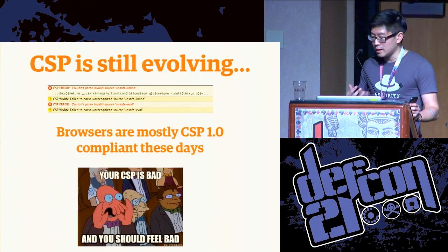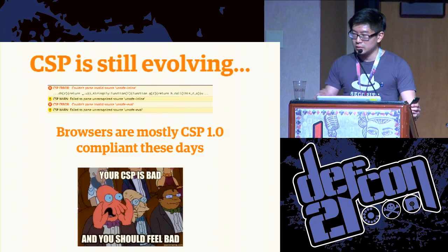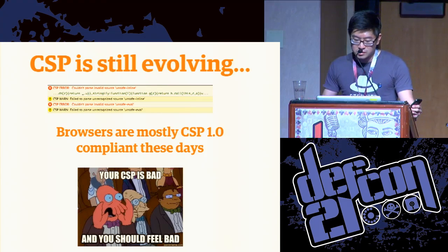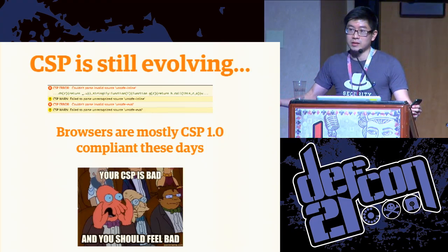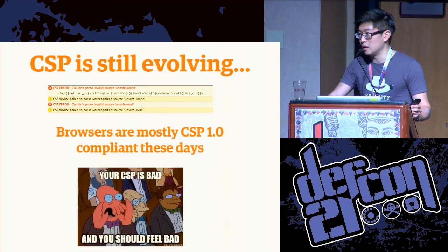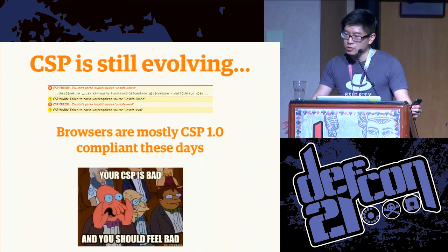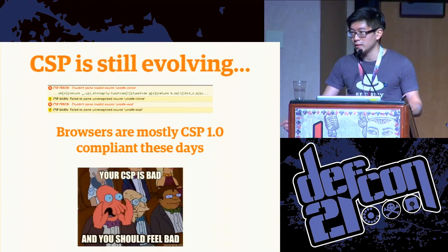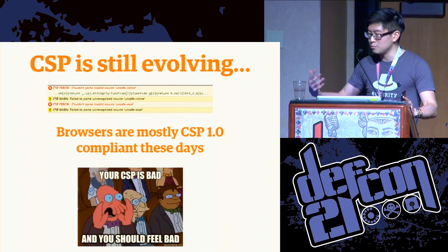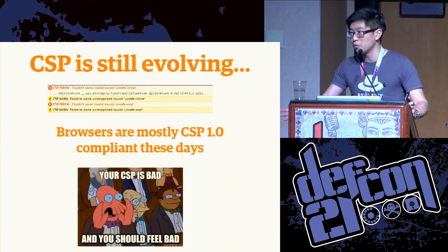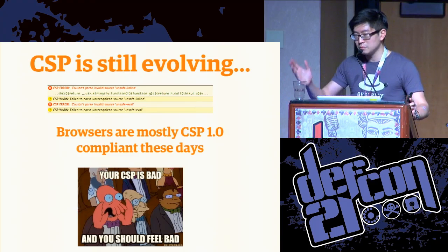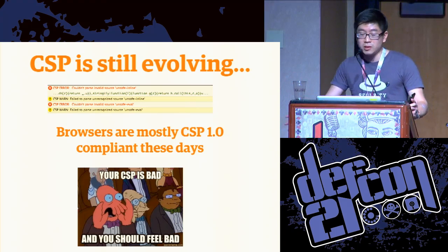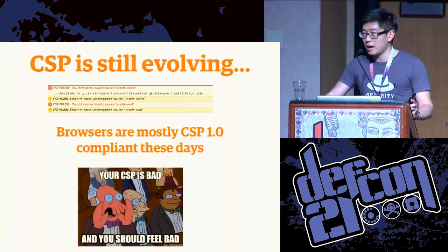An important aspect to note is that content security policy as a standard is still evolving. This screenshot was taken from a version of Firefox not too long ago. Firefox at the time had a bug where it didn't recognize the unsafe-inline or unsafe-eval directive. And Firefox 23 actually still has a bug where it doesn't allow you to whitelist unsafe style-src elements. So browsers these days are mostly up to spec with regards to CSP 1.0 compliance, but if you're seeing unexpected behavior, there's a strong possibility it could just be the client's browser acting up.